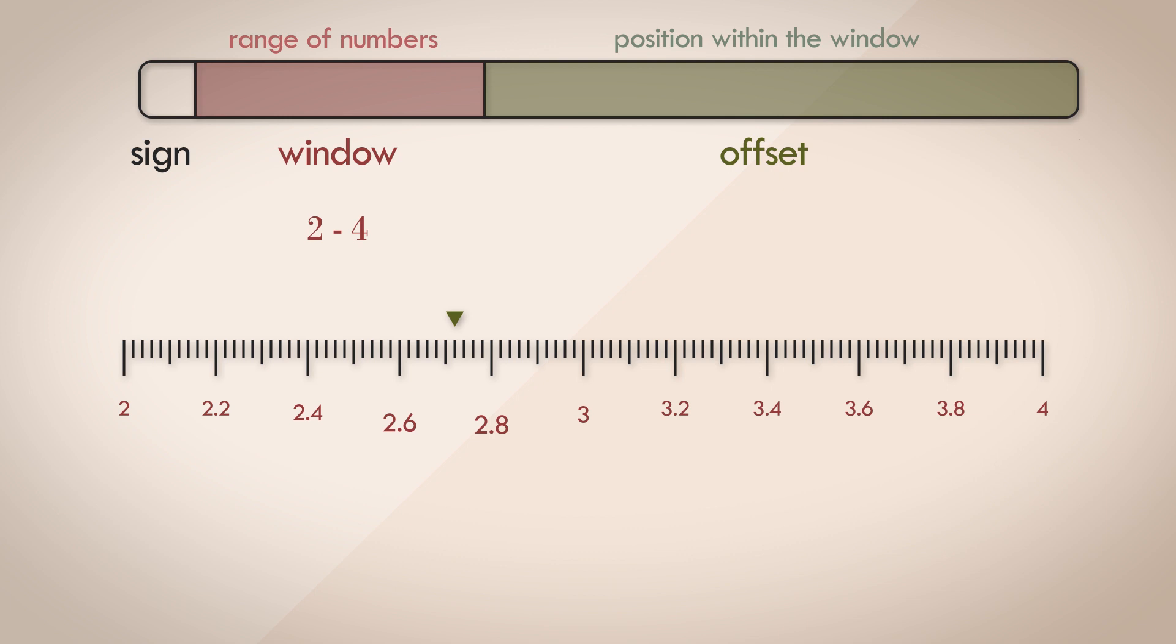Since the mantissa, or the offset section, is 23 bits in length, the window can be split up into 2 to the power of 23 distinct numbers. This is a constant for 32 bit floating point format. It doesn't change. All we are saying is we are splitting the window into 2 to the power of 23 intervals.